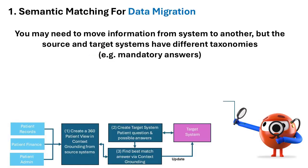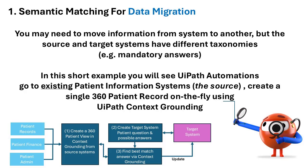For our data migration scenario, you may need to move information from one system to another, but the source and target systems have different taxonomies that need to be addressed. In this short example, you'll see UiPath automations go to existing patient information — the source — and create a single 360 patient record on the fly using context grounding.